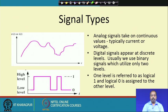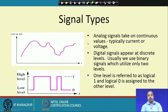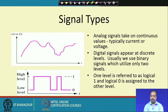An analog signal varies continuously over time — it may be a voltage or current signal. Analog signals take on continuous values and are typically specified as a function over time or as a differential equation. A current or voltage typically represents an analog signal. Digital signals, on the other hand, appear at discrete levels.